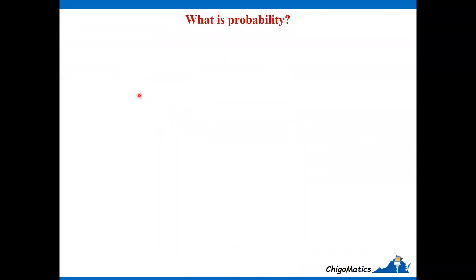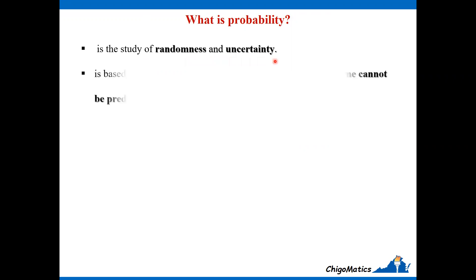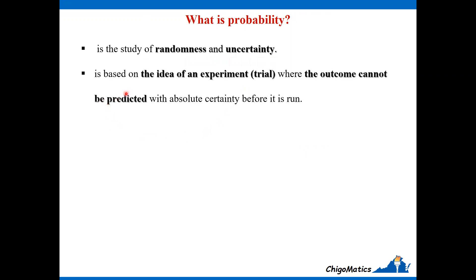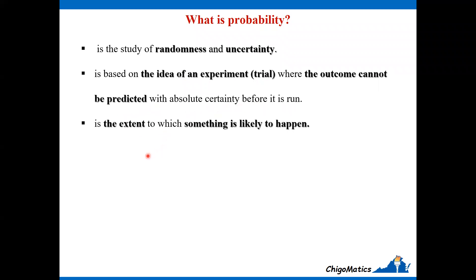What is probability? Probability is the study of randomness and uncertainty. It is based on the idea of an experiment or trial where the outcome cannot be predicted with absolute certainty before it is run. It is the extent to which something is likely to happen.